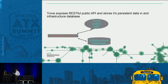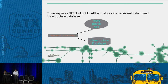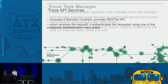Trove basically exposes a RESTful API and stores persistent data in the infrastructure database. It maintains its own database. When configuring, it keeps its metadata in the infrastructure database. It has various components.